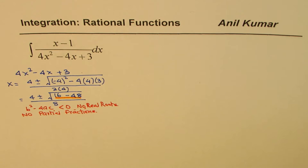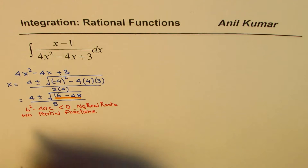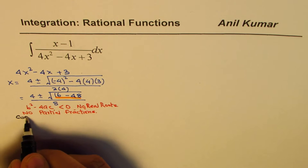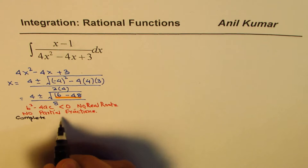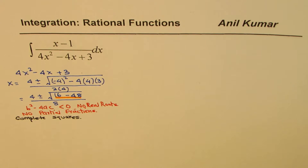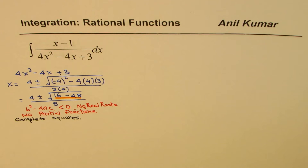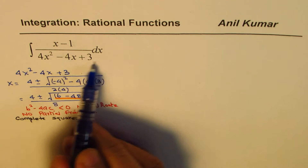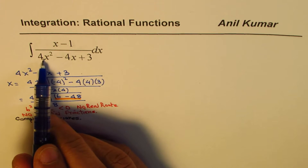So what do we do in this case? The method here is to do completing the square. We complete the square on the denominator, then substitute, and solve the integral. Let's work with the denominator again and complete the square.